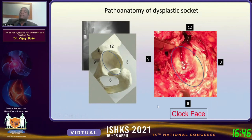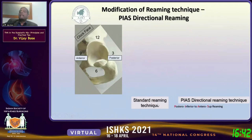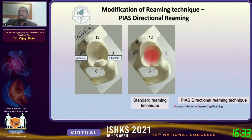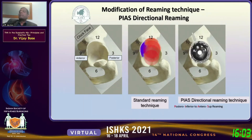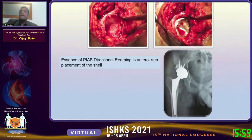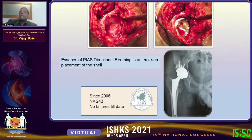There will always be a structural inferior osteophyte, and that defines the direction of dysplasia. We now prefer posterior-inferior to anterior-superior (PIAS) directional reaming. Traditional teaching was to remove the osteophyte and ream from 6 to 12 o'clock, but doing so reams into normal bone and misses the dysplastic segment anteriorly and superiorly. Instead, we preserve the structural inferior osteophyte — nature has given it to us — and start reaming from there, going anterior-superiorly. We place the cup slightly anterior-superiorly with screws, and over 15 years we have had zero socket failures with this technique.